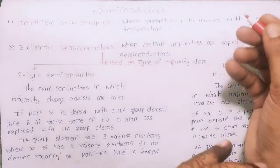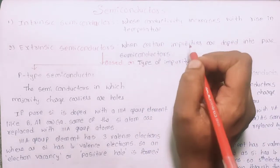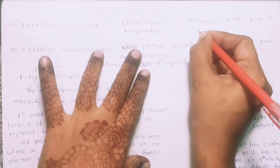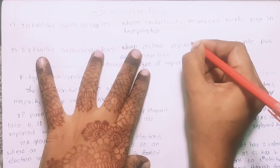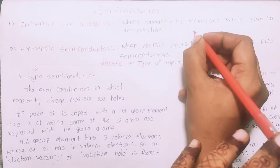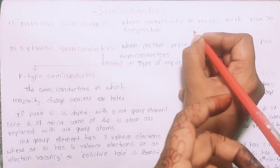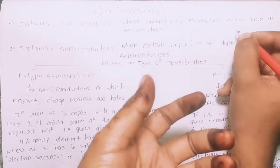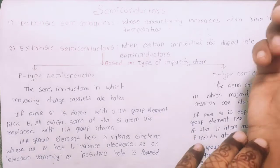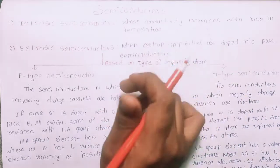For silicon and germanium, when the temperature rises, the bonds break and electrons become free. Because electrons move from the valence band to the conduction band, this is called flow of electrons. The conductivity increases in intrinsic semiconductors.